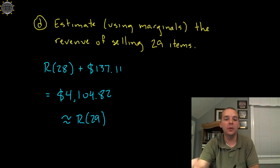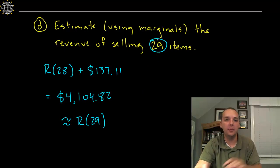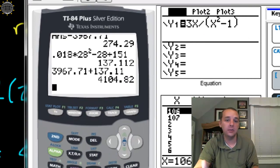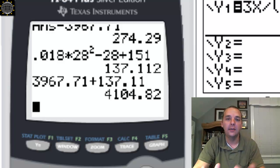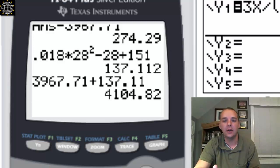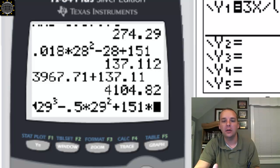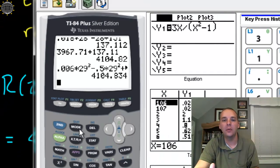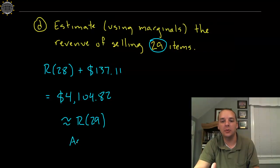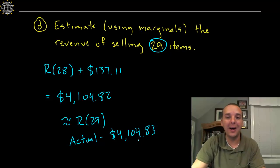Now these marginals are great, they really help us out because that helped us avoid taking 29 and plugging it in the original ugly revenue function. Now just for the heck of it, now that we're done, let's, just for the heck of it, let's take 29 and see how close this is, and you'll find that using marginals will get you very, very closely, very, very close to the actual revenue for selling 29 items. Let's try it. 0.006 times 29 cubed, minus 0.5 times 29 squared, plus 151 times 29, and we get 4,104.83. So the actual would be 4,104.83, we were only off by a penny, that's fantastic.